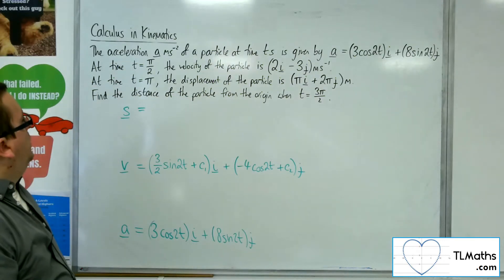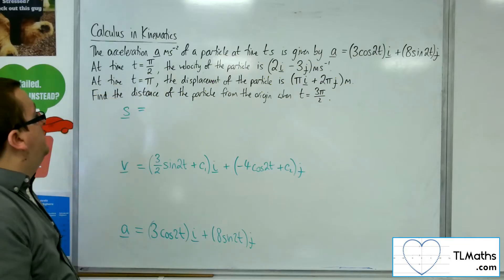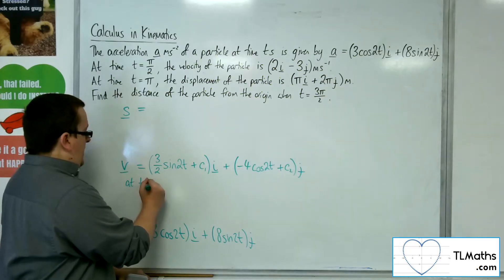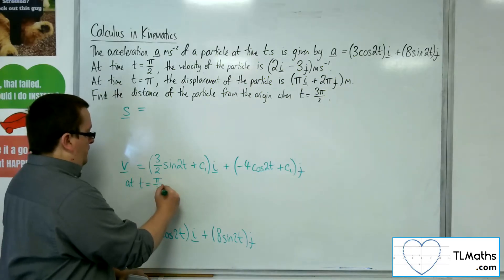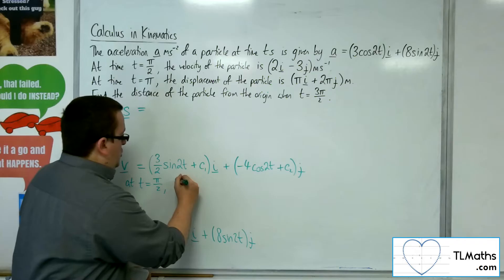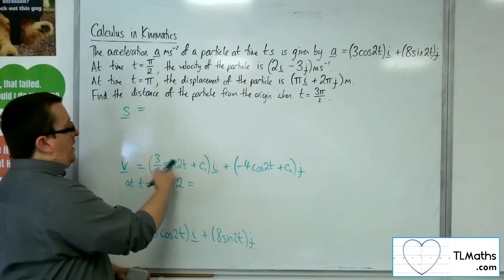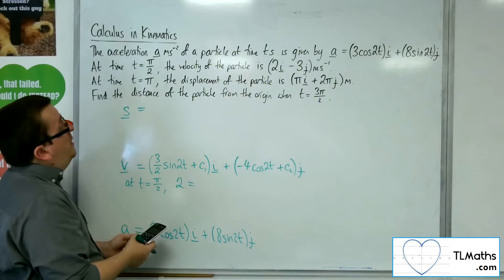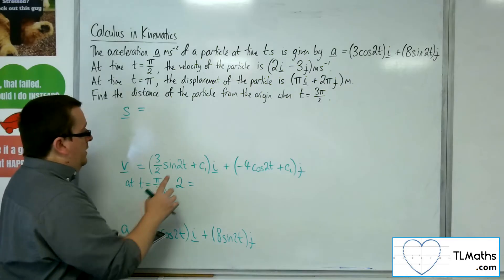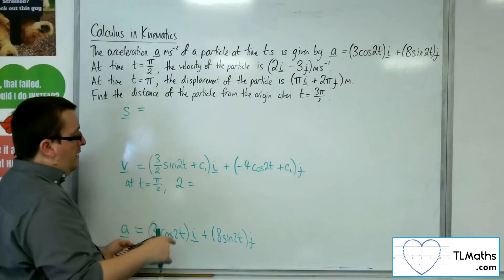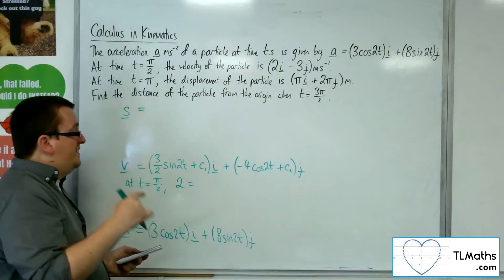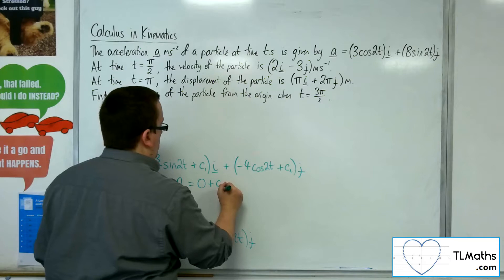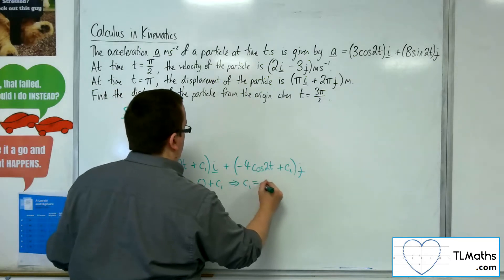What I'm told is that at time t equals π/2, the velocity of the particle is 2i minus 3j. So at t equals π/2, 2 is going to be equal to the i component. Substituting π/2 in, I get sine of π, and sine of π is 0. So that means I get 0 plus c1, and so c1 is 2.